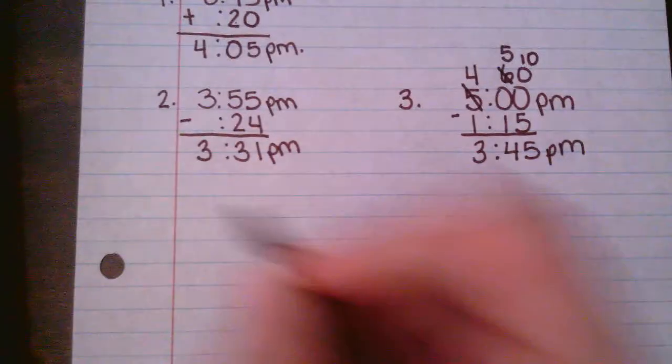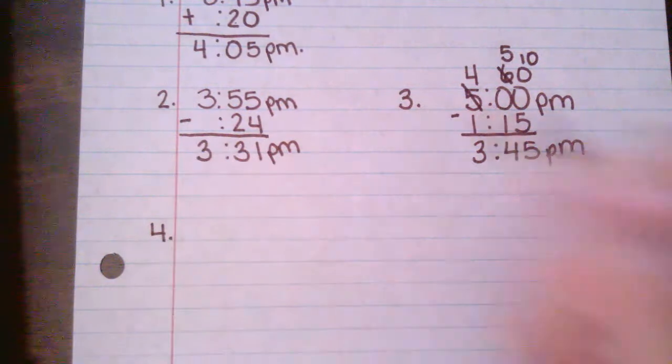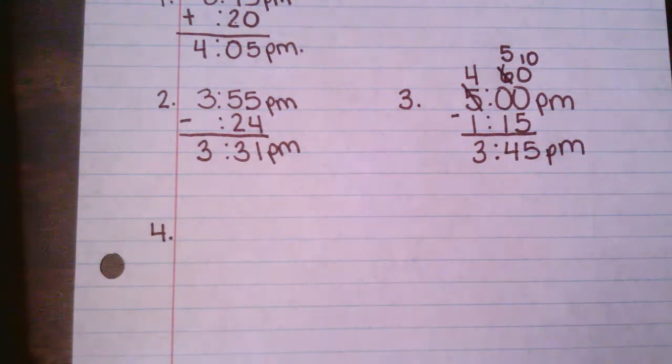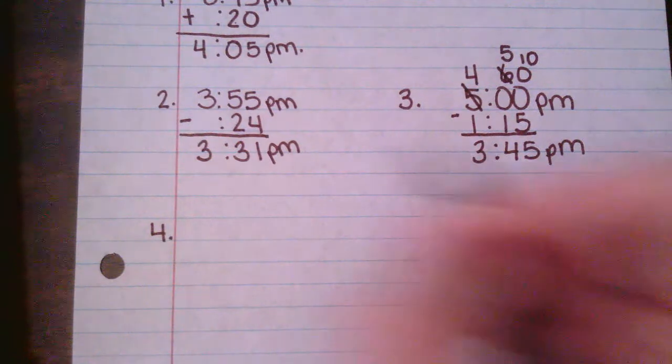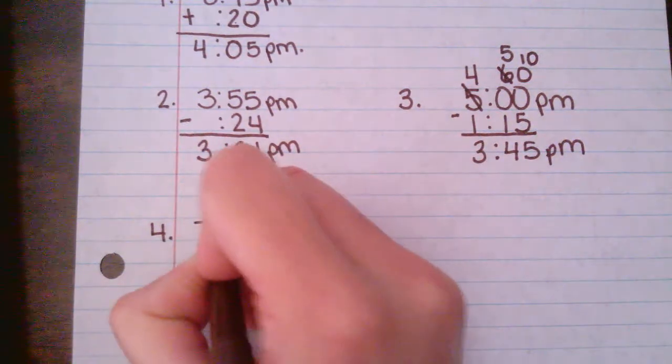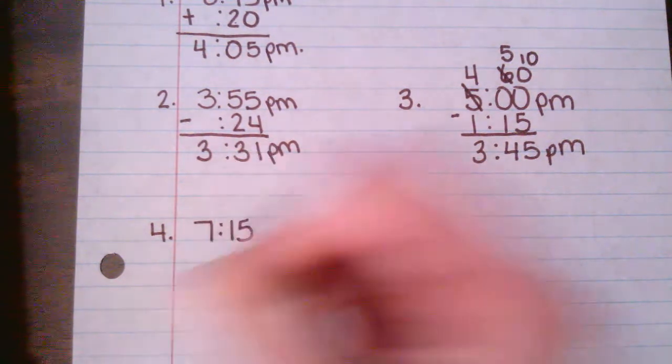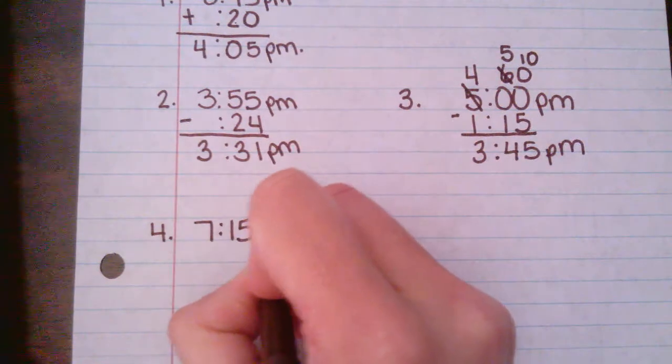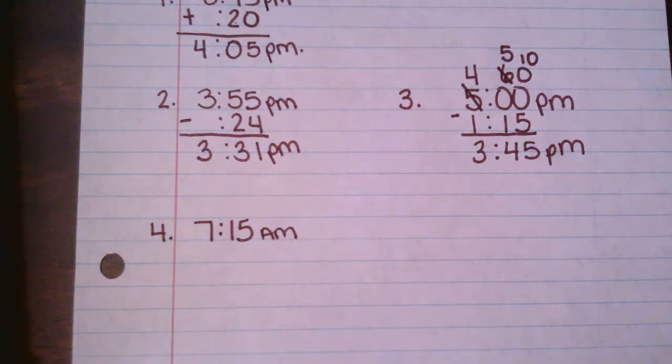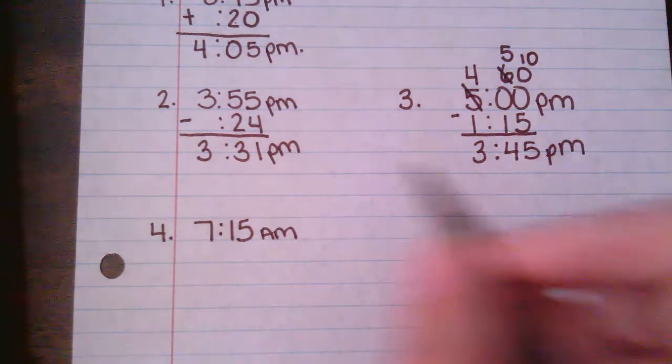Let's try number four. Mr. Garmo left for work at 7:15. 25 minutes later, he arrived at work. What time did he arrive? So he left at 7:15 a.m. And it took him 25 minutes. And what time did he get to work?